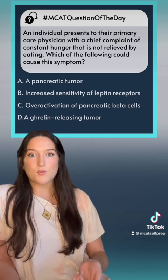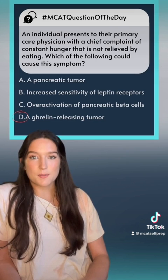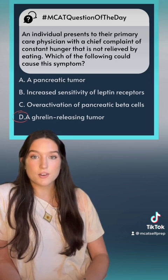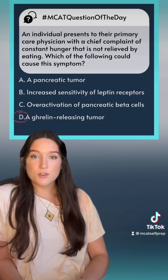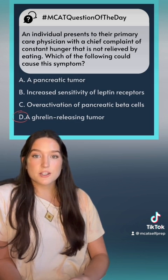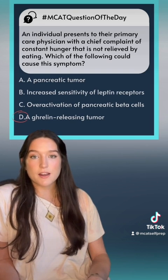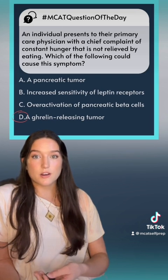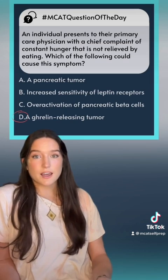Let's go through D to figure out exactly why it's correct. First of all, what is ghrelin? Think of ghrelin as the opposite of leptin — ghrelin is released and travels to your hypothalamus to tell your body that you're hungry. I like to remember the function of ghrelin because it sounds a lot like grumbling; your stomach's grumbling because of ghrelin. So if you have a tumor in your ghrelin-releasing cells, the growth of these cells is increased, and therefore the secretion of ghrelin is also increased. An increase of ghrelin stimulating your hypothalamus is going to make your body think it's super hungry and you can't stop eating. So we can confidently say that D is the correct answer.